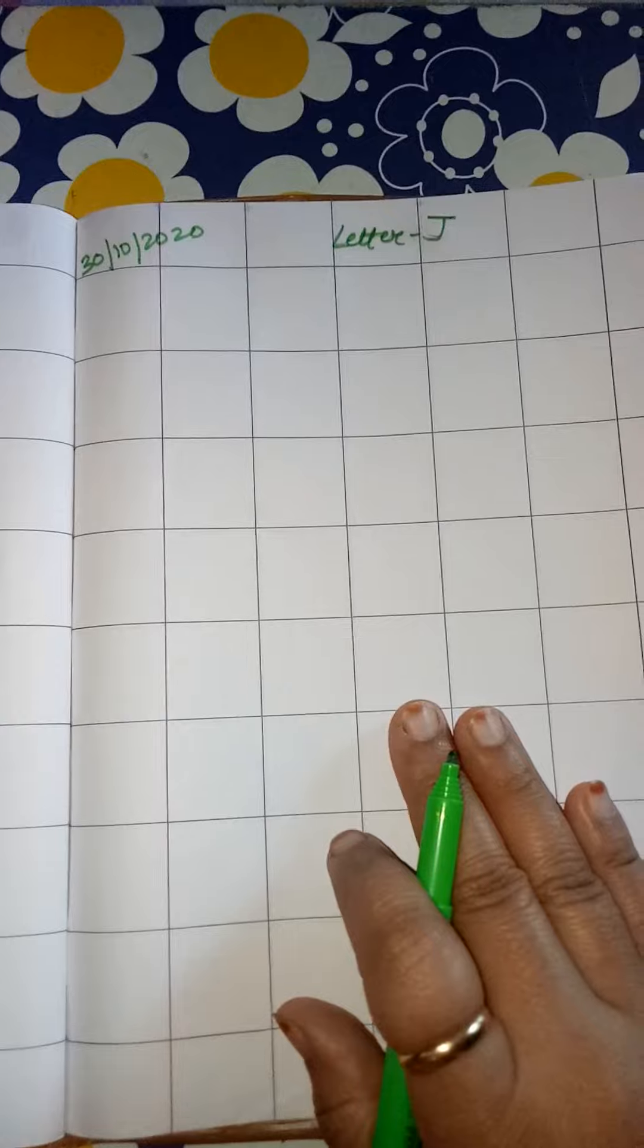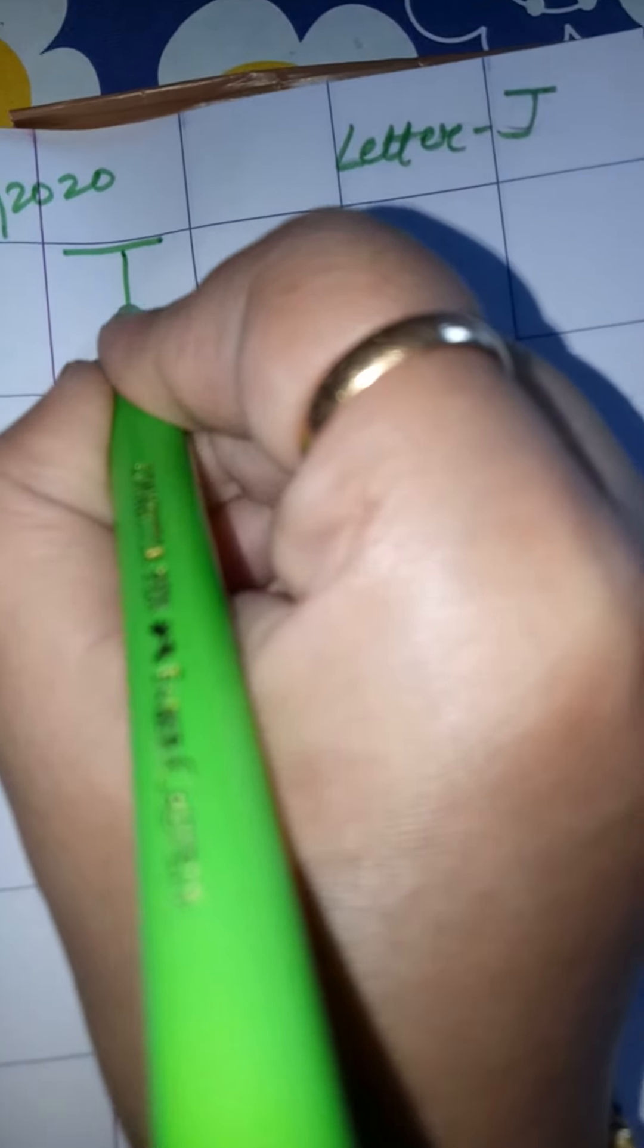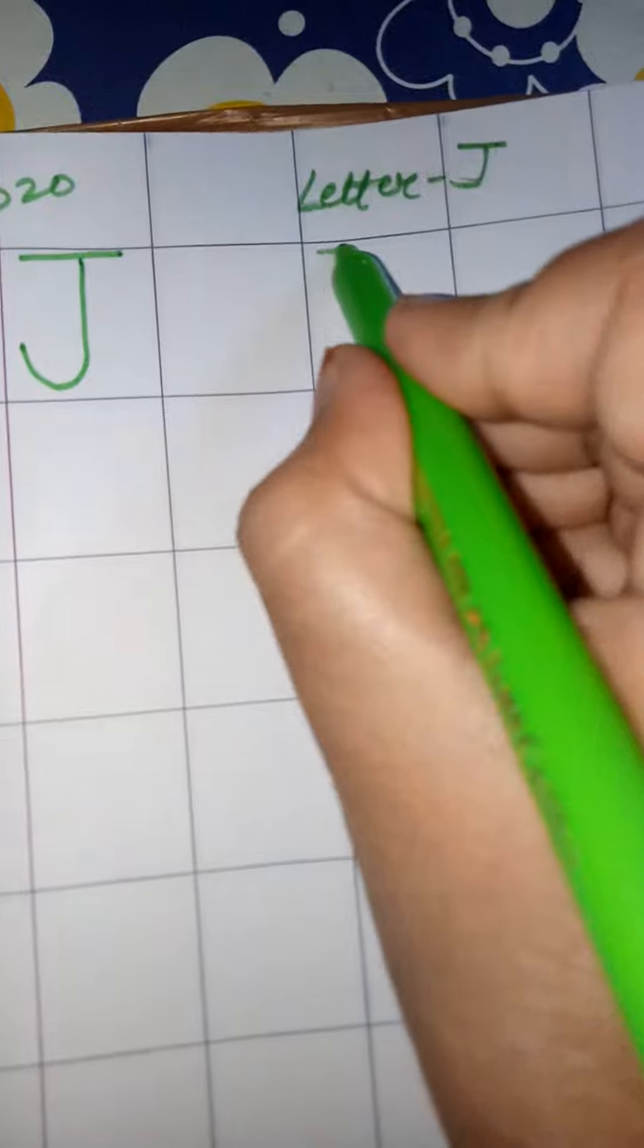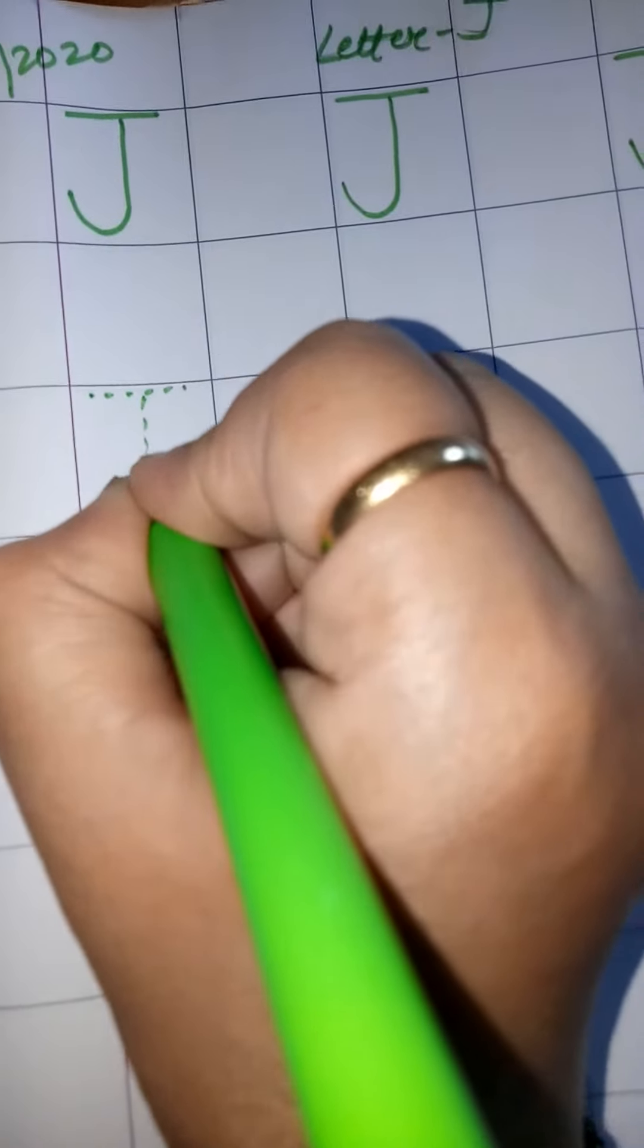Now parents, please write these letters like this. This is letter J. Letter J. And also make these dots for the children. J for joker, J for jug. So dots are ready for you.